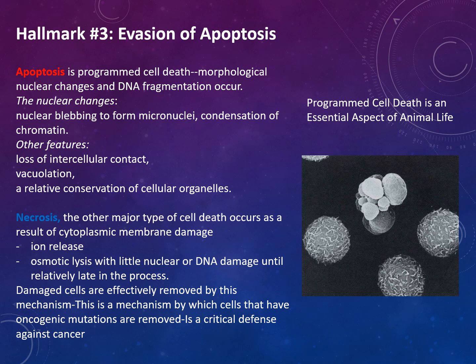A hallmark of cancer is evasion of apoptosis — also known as programmed cell death — in which morphological nuclear changes occur and DNA fragmentation takes place. Nuclear changes include nuclear blebbing, formation of micronuclei, and condensation of chromatin. There is also loss of intercellular contact, vacuolation, and relative conservation of cellular organelles. Damaged cells are effectively removed by this mechanism, which is a critical defence against cancer.